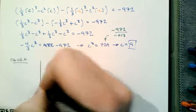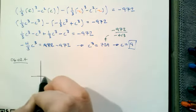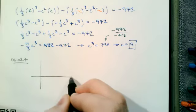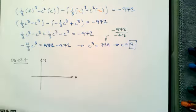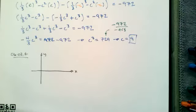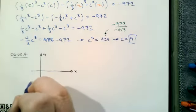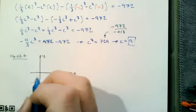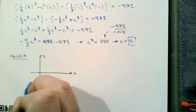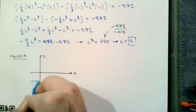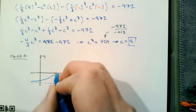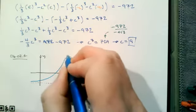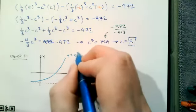Our function is e to the x minus 10. Against my own advice, I'm going to draw it — I only need the positive x-axis. We're going to have a horizontal asymptote at negative 10, and I'm just going to draw an exponential function. There's y equals e to the x minus 10.